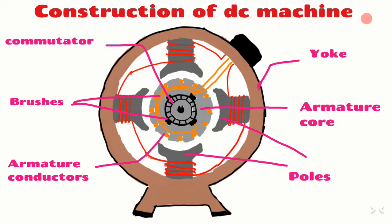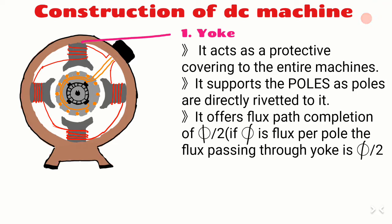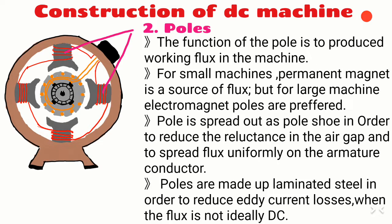The outermost part of the machine is the yoke. It acts as a protective covering to the entire machine and supports the poles, as the poles are directly bolted to it. It provides a path for flux. The flux passing through the yoke is phi divided by two, so the yoke should be of good magnetic material. For small machines we use a cast iron yoke, and for large machines we use fabricated steel.